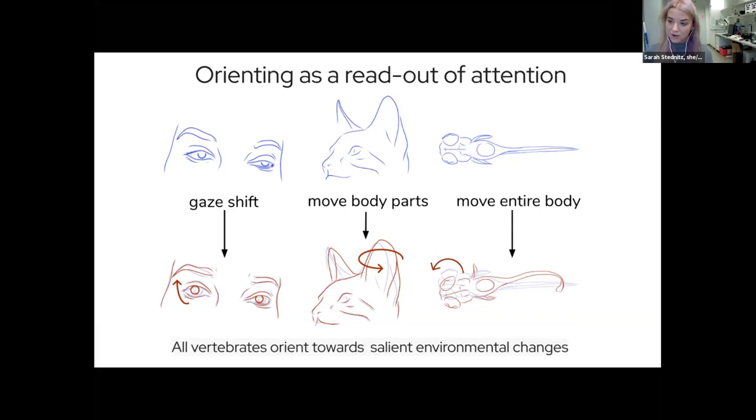In our model system, the zebrafish larvae will do an orienting turn and move their entire body. But regardless of the mechanism for directing the sensory organ—eyes, ears, or body—towards this relevant stimulus, it's essentially the same type of behavioral readout. It shows you that an animal is selecting and directing its attention towards something in the environment.